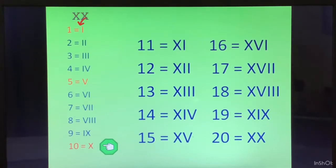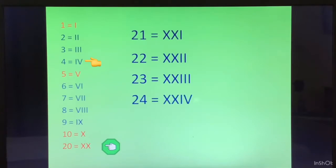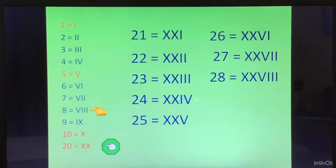Now look at, we are going to concentrate 20 to 30. So XX is 20. We have put XX in front of all numbers from 1 to 10 and generate 21 to 30. 21 is XXI, 22 is XXII, 23 is XXIII, 24 is XXIV, 25 is XXV, 26 is XXVI, 27 is XXVII, 28 is XXVIII, 29 is XXIX. 30, it is triple X.